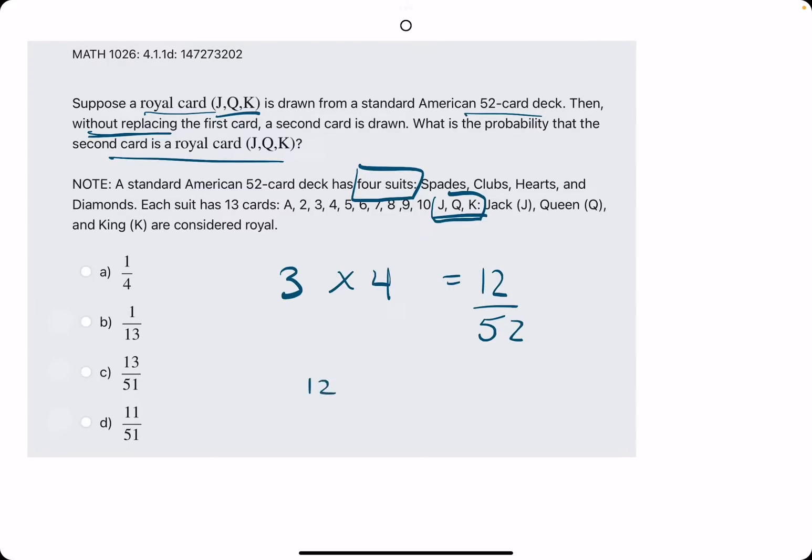And so technically, that would be the probability of drawing that first card. But they don't want to know that. We don't really need to incorporate this, but this might help us pinpoint what the next step is.